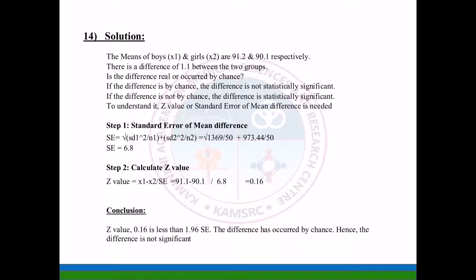The standard error of mean difference is equal to square root of (SD1² / n1 + SD2² / n2), which equals square root of (1369/50 + 973.44/50). The standard error comes to 6.8. The second step is to calculate the z value: z = (x1 - x2) / SE.